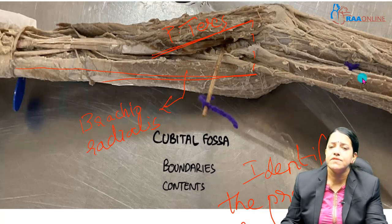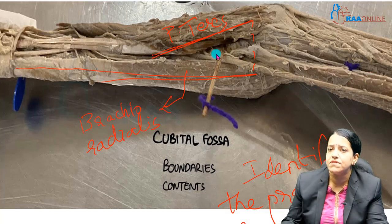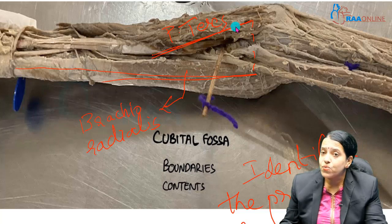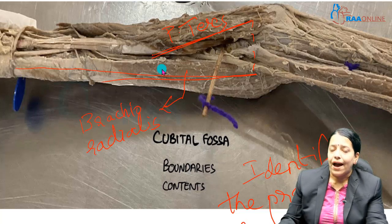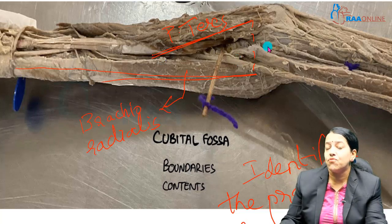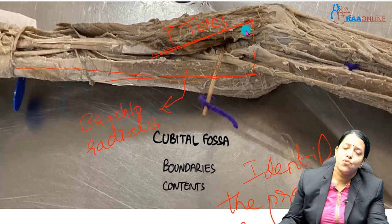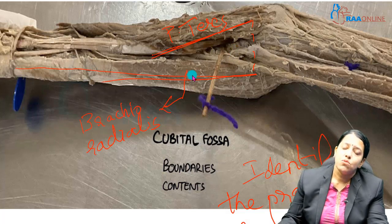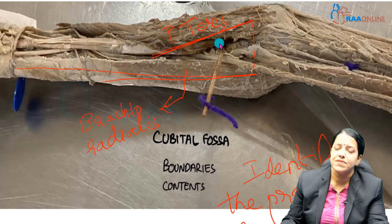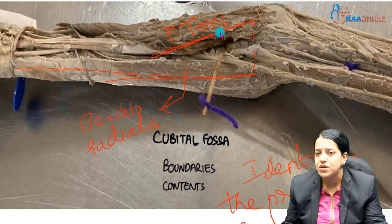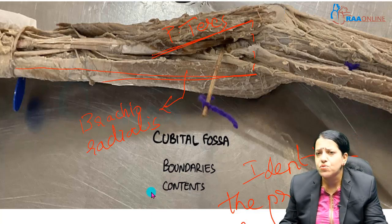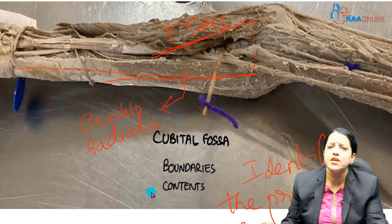For the roof: skin and superficial fascia, but importantly the median cubital vein — which connects the basilic vein with the cephalic vein — is present, along with cutaneous nerves in the skin. For the floor: the upper part is formed by the lowermost part of the brachialis, and the lower part of the floor is formed by the supinator, a deep muscle of the extensor compartment. This covers the boundaries of the cubital fossa — it can come as a short note, MCQ, or spot identifier question.